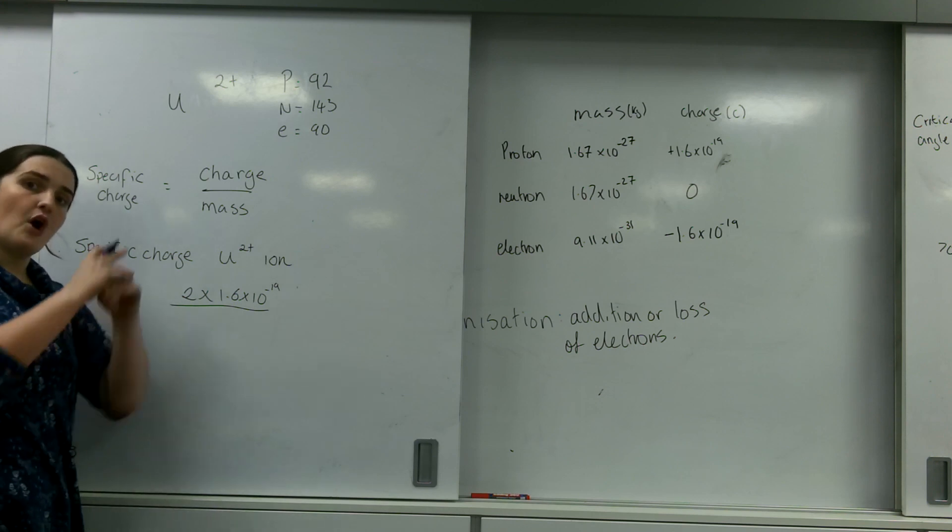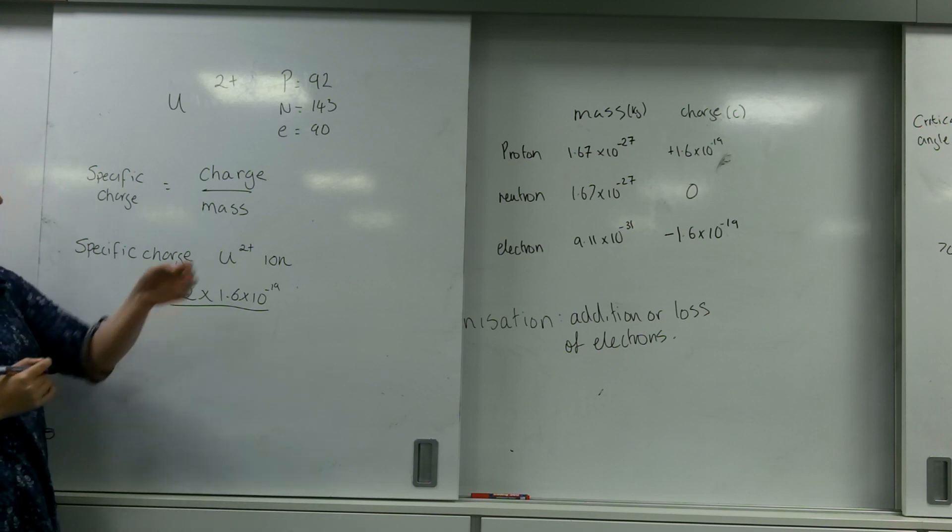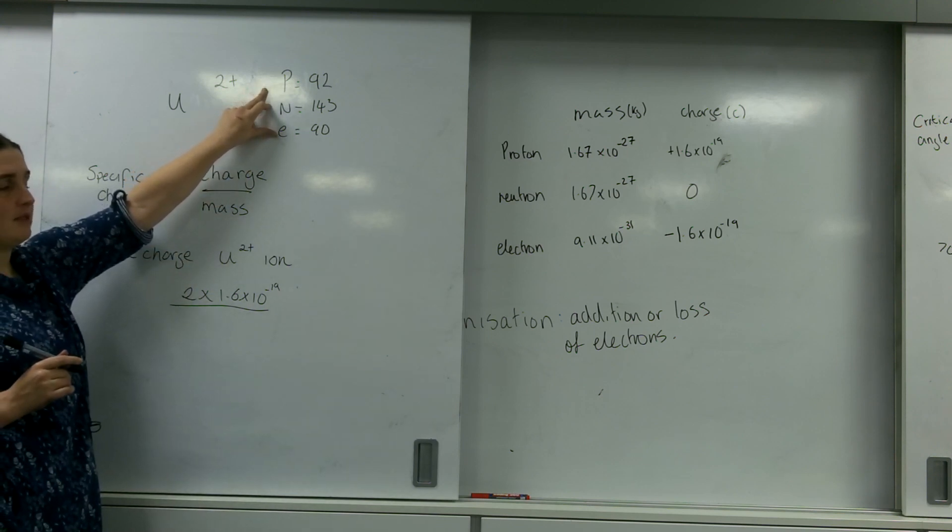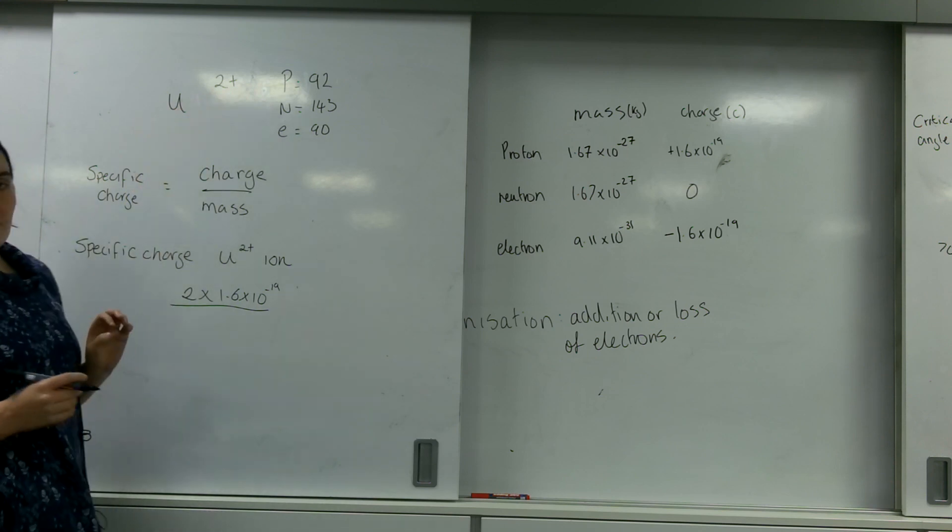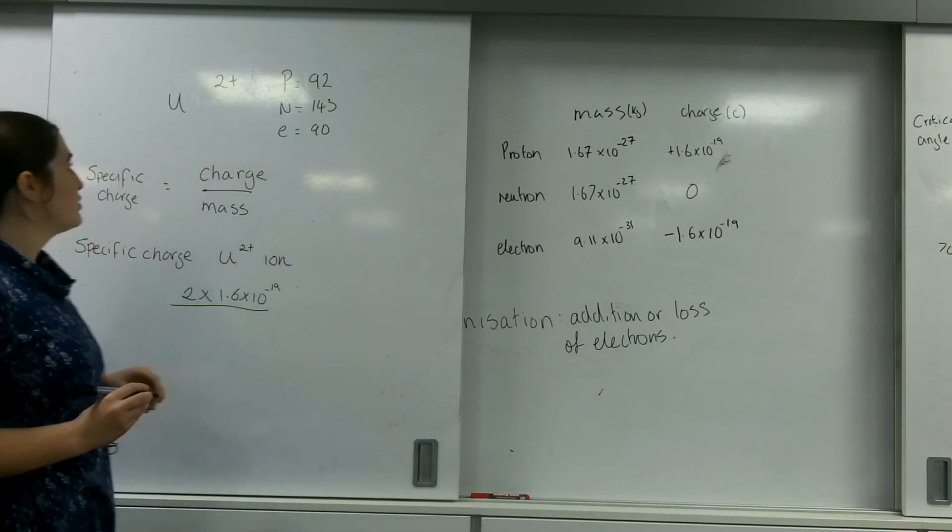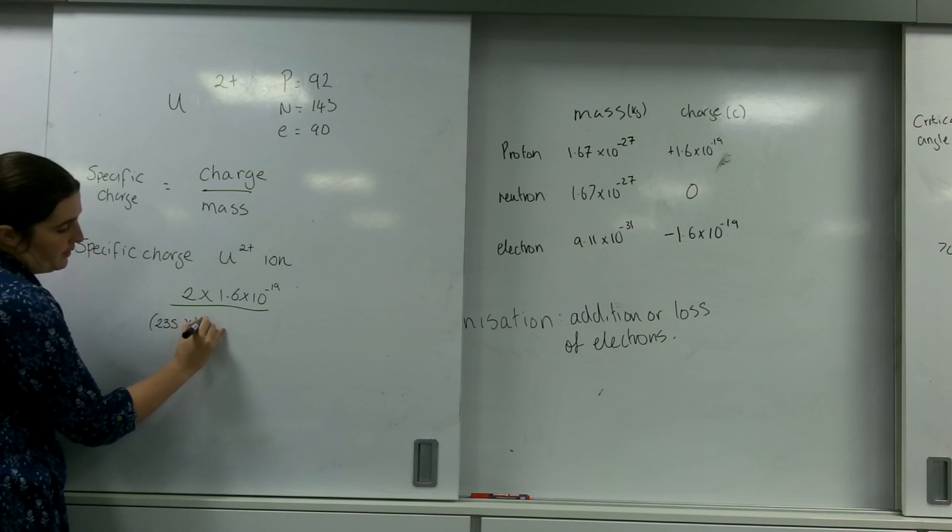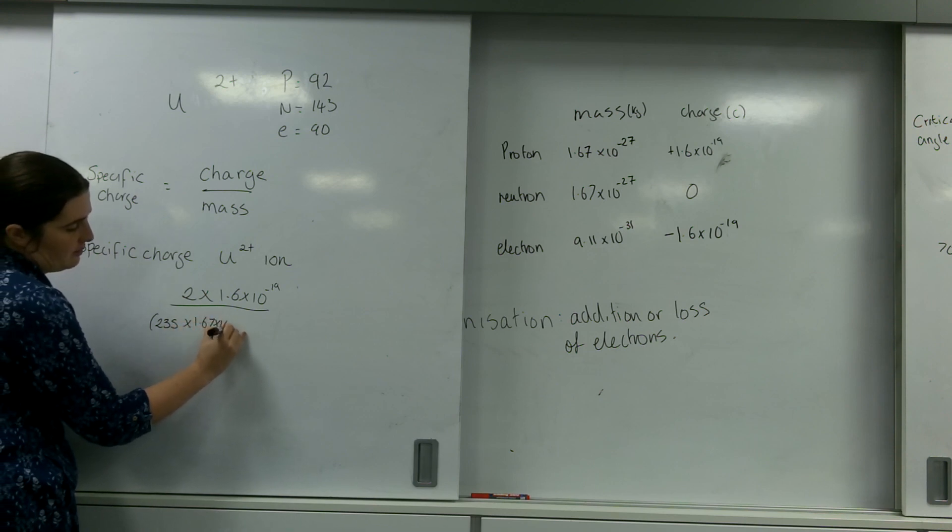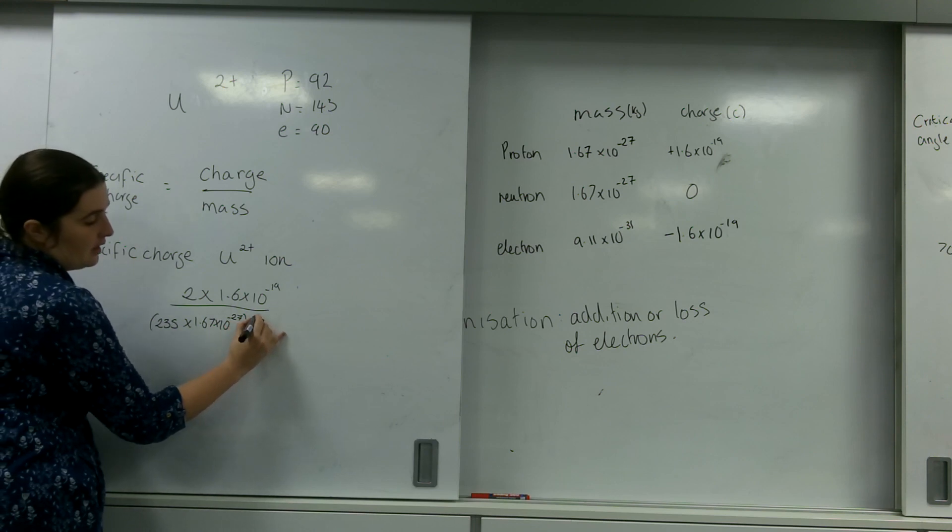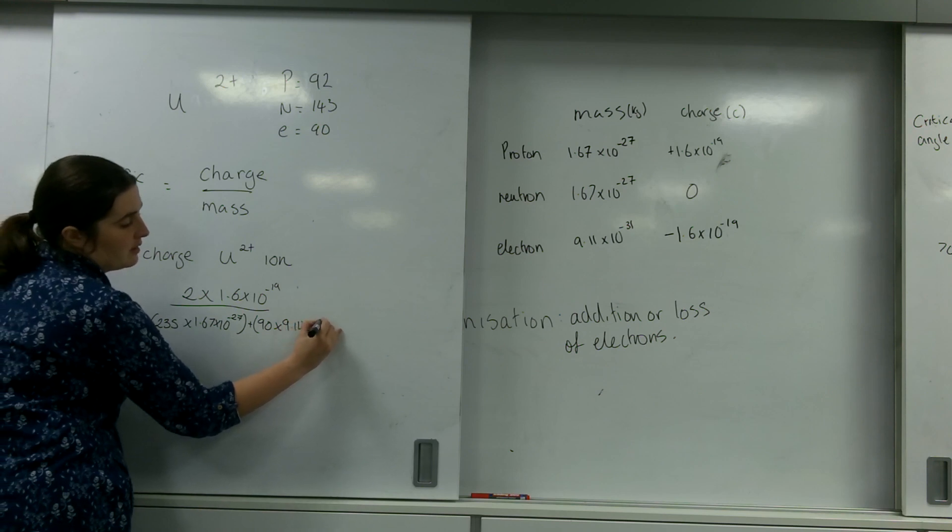I'm going to be doing the mass of the whole ion. So, I need the mass of the proton, the masses of the neutron, and I'm going to need these masses of these electrons here. For first year, protons and neutrons have the same mass. So, I'm going to have 235 times 1.67 times 10 to the minus 27, plus 90 times 9.11 times 10 to the minus 31.